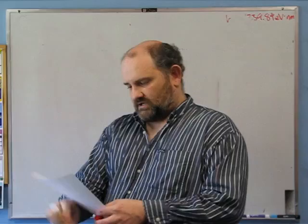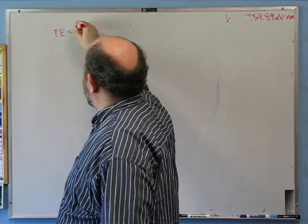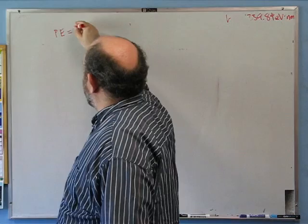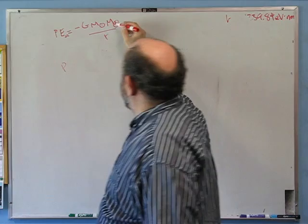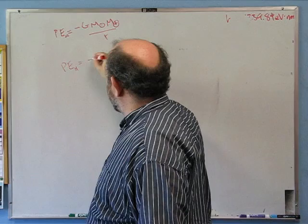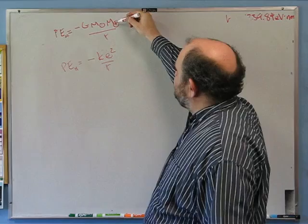Third problem: in a 1/r potential — including the potential energy of an electron orbiting an atomic nucleus and the potential of a planet orbiting a star — the potential energy of the Earth-Sun system is minus G times M_sun times M_earth divided by r, where r is the distance from the Earth to the Sun. Whereas the potential energy of an electron in a hydrogen atom is minus k times e² over r, where e is the charge on the proton and the charge on the electron.